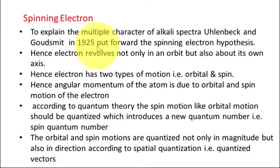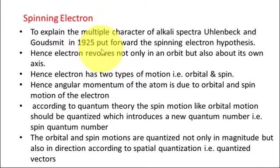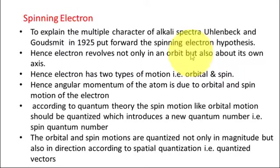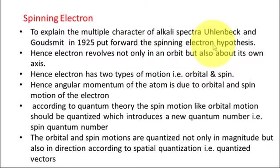The next concept is the spinning electron. Apart from revolving around the nucleus, the electron also moves around itself — that is called spin. This spin concept was introduced by Uhlenbeck and Goudsmit in 1925. The spinning electron hypothesis, put forward by these two scientists, brought a great change in atomic models and a number of theories were explained by it.